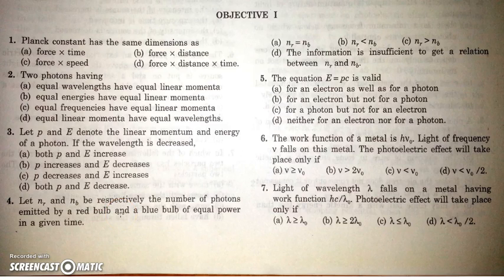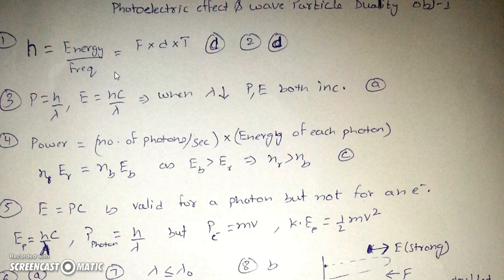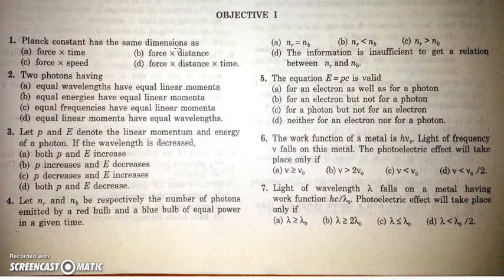Hello friends, in this video we'll be discussing photoelectric effect from H.C. Verma. Let's start with objective one. In the first question we have to find that Planck's constant has a dimension same as which of the four options. Planck's constant is energy upon frequency. Energy can be written as force into distance, and inverse of frequency is time, so the dimensions are force × distance × time.